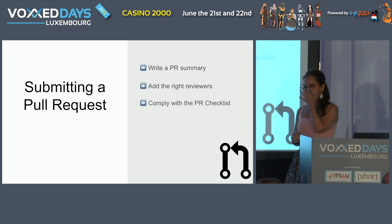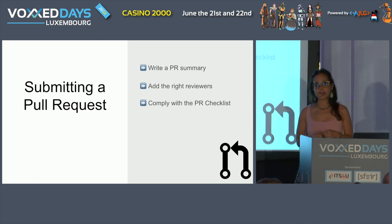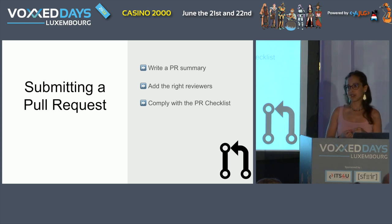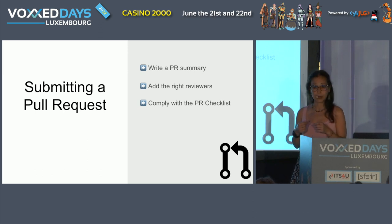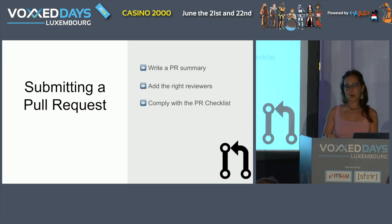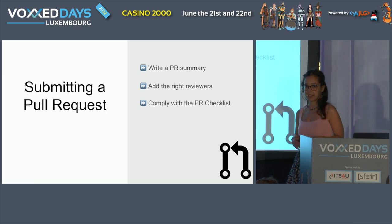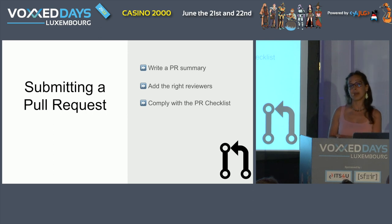The third point is very important: before submitting any pull request, we should make sure it complies with what we call the PR checklist. I'm going to talk about the PR checklist in more detail in the coming slides. But as an example, I should make sure that the new code has unit tests and it passes all those tests, and also doesn't break any existing tests. This is one example of what we should comply with in the PR checklist before submitting.